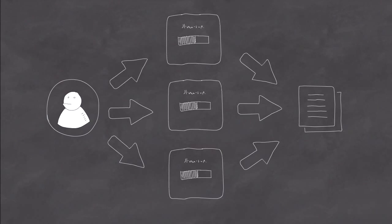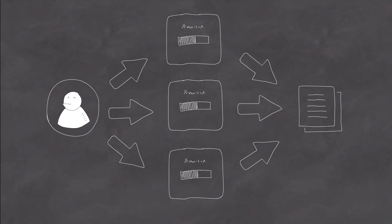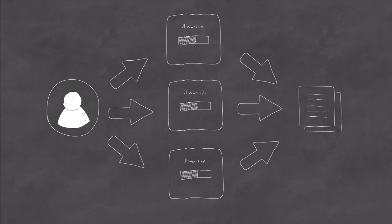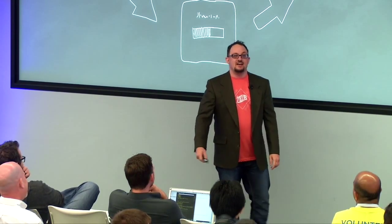Does anybody see a problem with this system architecture? The file was completely unusable. She didn't expect that - she thought the computer would take care of it. It does take care of it - you just don't get anything useful in the end. I asked how she'd solve the problem, and her first response was: what if we use XML? XML is not a database.